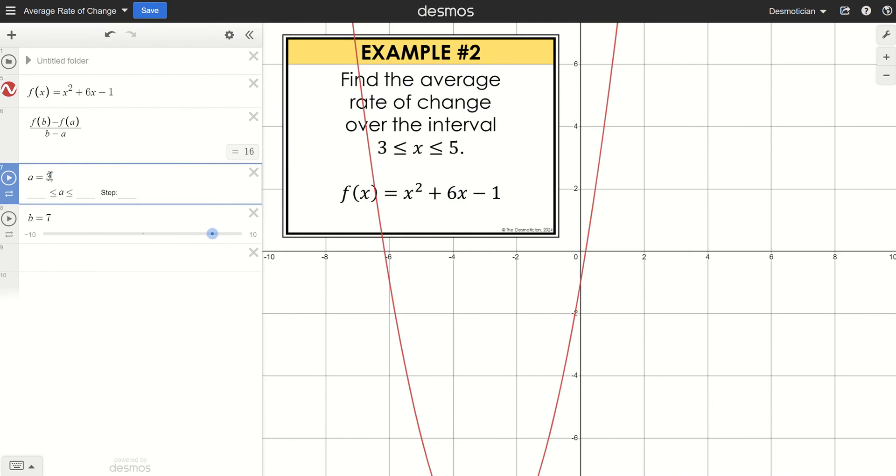So my left endpoint is 3 and my right endpoint is 5, and I already have this part, f(B) - f(A) all divided by B - A. And that gives me the average rate of change of 14.